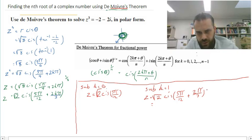Root 2 cis, 13 pi on 12. So there's my second answer, root 2 cis, 13 pi on 12.